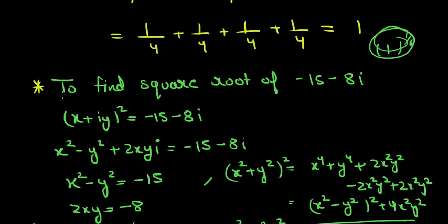The next question was to find the square root of (−15 − 8i). You might think to use De Moivre's theorem, but we can't easily find the angles for 8 and 15, so we use a simple algorithm. We let (x + iy)² = −15 − 8i, where x + iy is the square root we want to find.